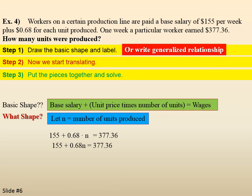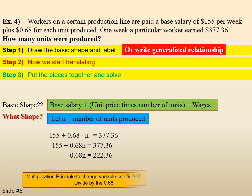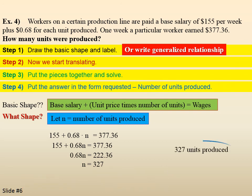Put the pieces together, write a little clearer without that multiplication dot. Use the addition principle to isolate the variable term. We'll subtract $155 from both sides. Use the multiplication principle. So, we'll divide both sides by 0.68. So, it looks like, once we put it in the form requested, it's 327 units were produced.